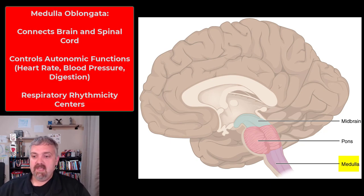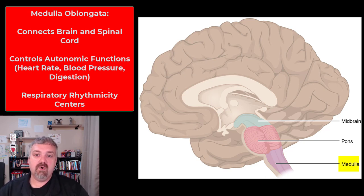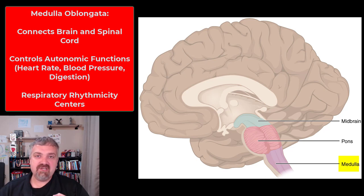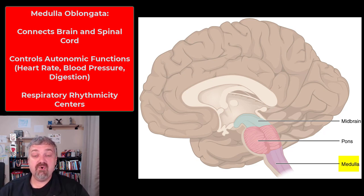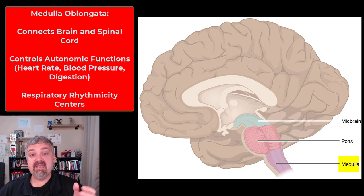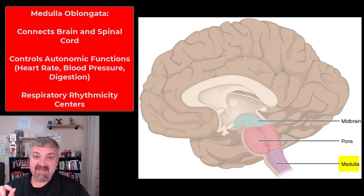The medulla oblongata is what connects the spinal cord to the brain, so it's the relay center — it carries information to and from the spinal cord to the brain. The medulla oblongata is where basic life support functions occur: autonomic control of things like digestion, heart rate, blood pressure control. Another key area is the respiratory rhythmicity centers. This is the part of the brain that tells you to unconsciously and automatically breathe in and breathe out. I point that out because the rate centers are somewhere else.